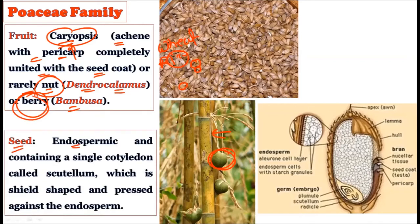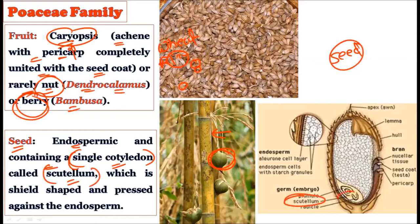The seed is endospermic and contains only a single cotyledon, since Poaceae is a monocotyledonous family. This single cotyledon is called the scutellum. It is shield-shaped and pressed against the endosperm inside the seed.